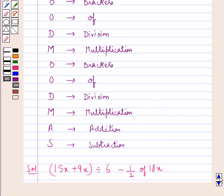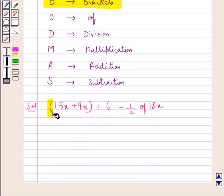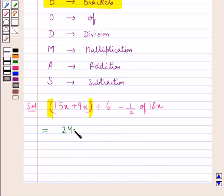According to the BODMAS rule, first we solve the brackets. We have the brackets here, so first we solve the expression within these brackets. This would be equal to 15x plus 9x which is 24x divided by 6 minus 1 upon 2 of 18x.